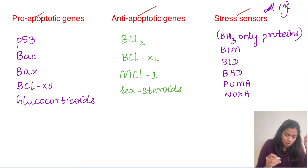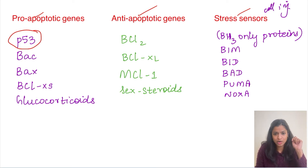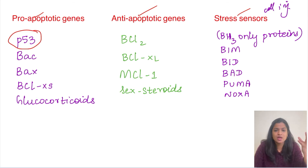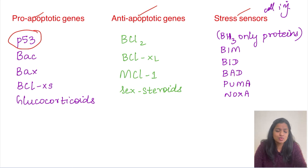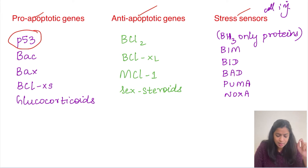The most important pro-apoptotic genes are: p53, BAX, BAD, BCL-excess, and glucocorticoids, which also stimulate apoptosis. When there is cell injury, p53 protein is activated — it is the master regulator. Initially it tries to make the cell undergo repair, but if repair is unsuccessful, it triggers cell death by apoptosis. So p53 is the most important pro-apoptotic gene.